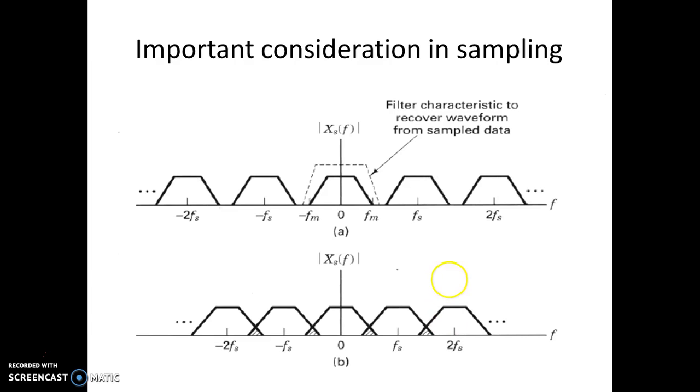All right, a very important consideration in sampling is that your sampling frequency fs—this value—should be greater than or equal to 2 times fm. fm is the maximum frequency in your continuous time analog signal.